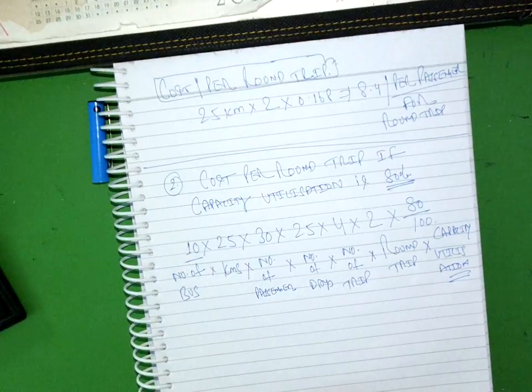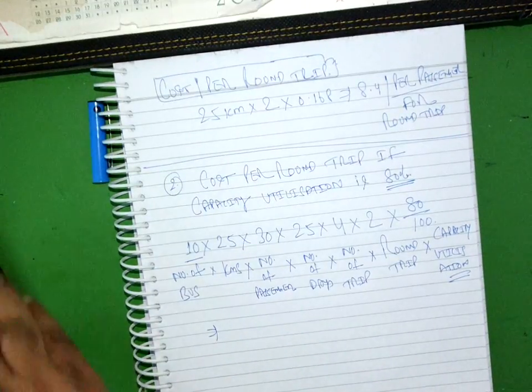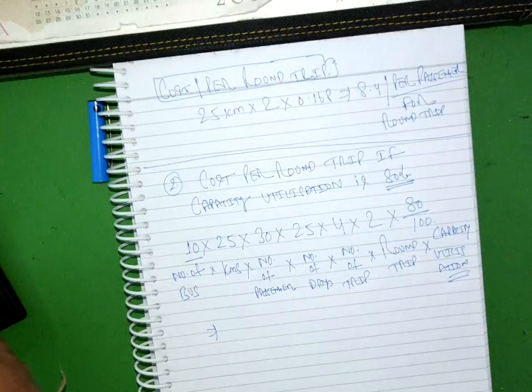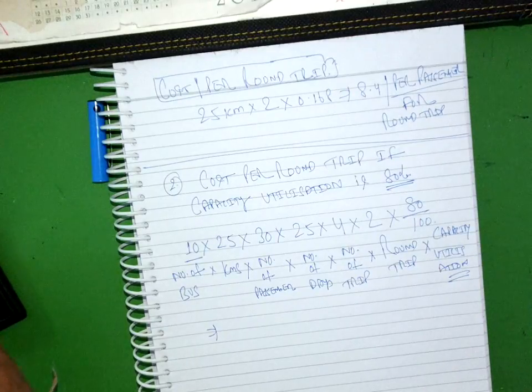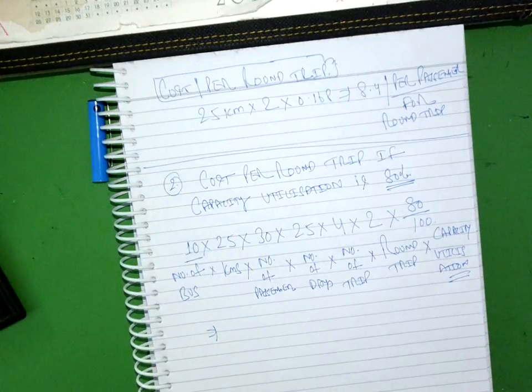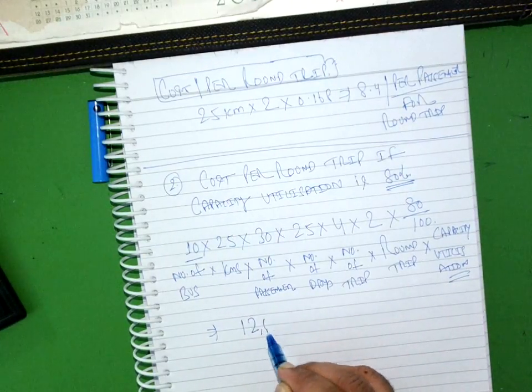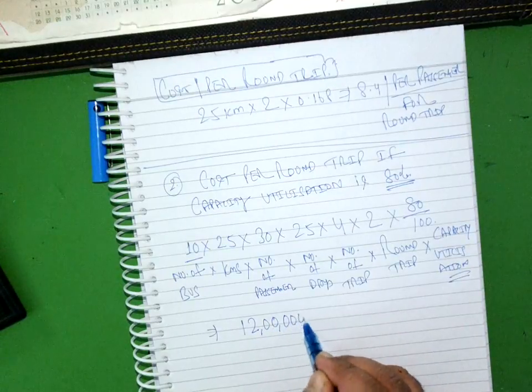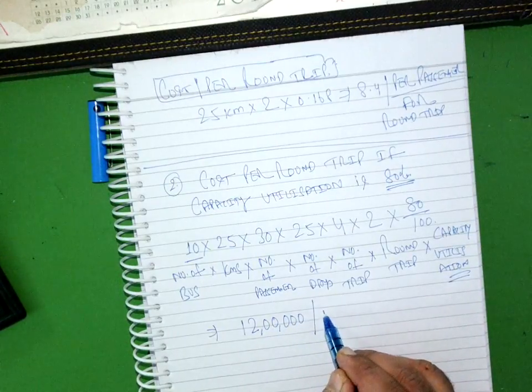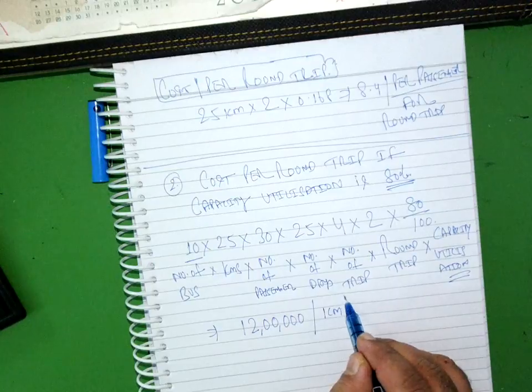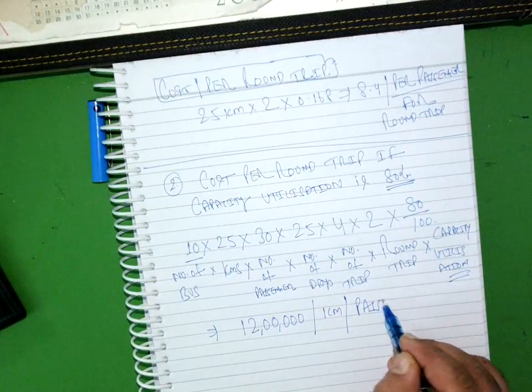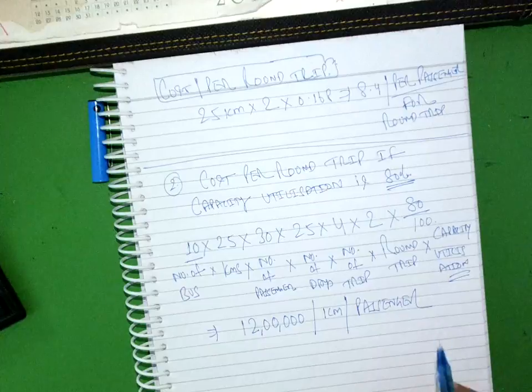This is the system to calculate the unit. So 10 into 25, into 30 into 25, into 4 into 2, into 80 percent. How much it comes? It comes to 12 lakh per kilometer per passenger.